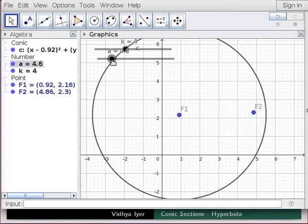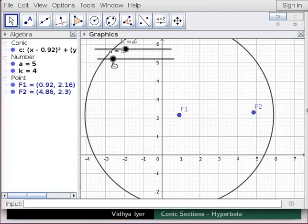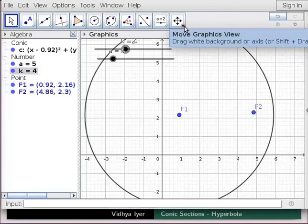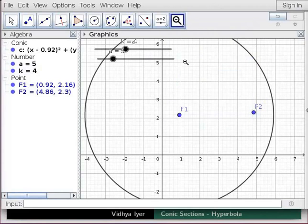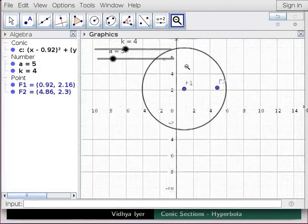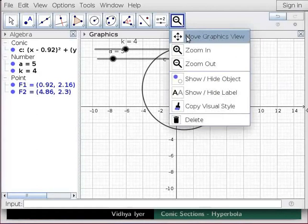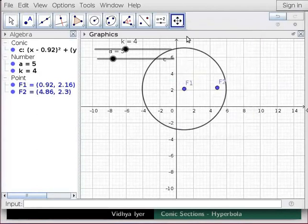Drag slider A to 5. Under Move Graphics View, click on Zoom Out Tool. Click in Graphics View. Click on Move Graphics View to move the background as required.